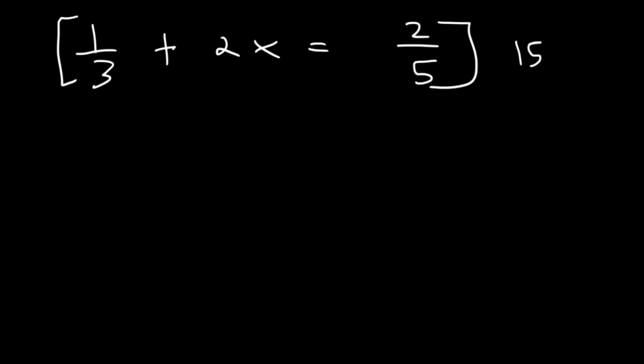So now let's distribute the 15 to everything on the inside. So what's 15 times 1 3rd? 1 3rd times 15 is the same as 15 divided by 3. And so that's 5. Now what about 15 times 2x? That's simply going to be 30x. Now 15 times 2 over 5. We could say 15 times 2 is 30. 30 divided by 5 is 6. Or we could say 15 divided by 5 is 3. 3 times 2 is 6.